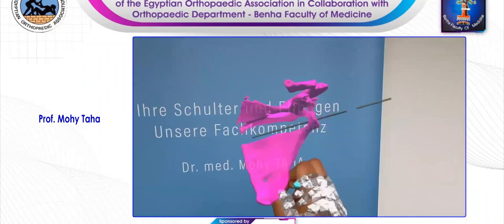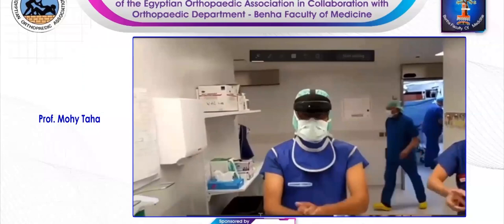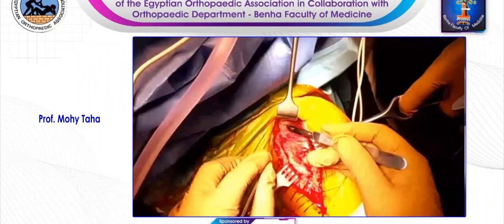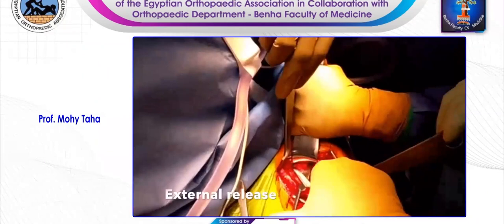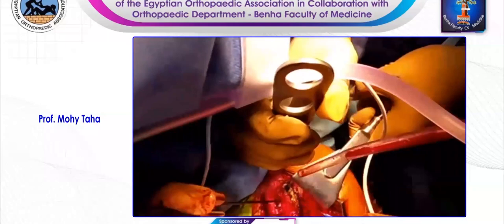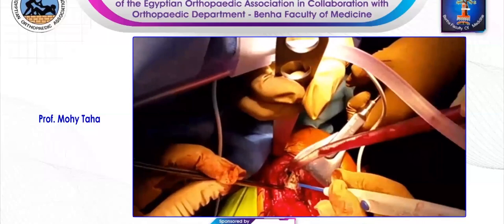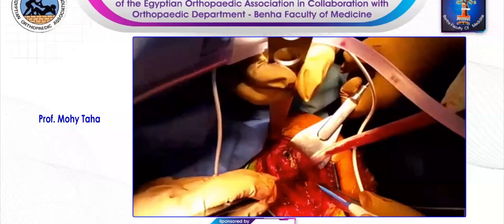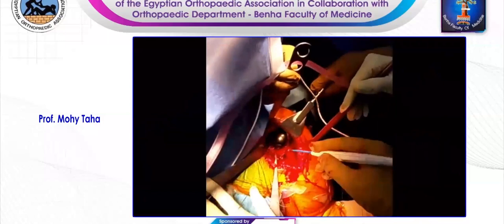Now getting ready for the operation, wearing the HoloLens. This is a deltopectoral approach, going through the previous scar and performing the external release or subdeltoid release. Now we go through the scar of the subscapularis — we couldn't really find a tendon. But here you see the pyrocarbon hemiarthroplasty. So you see the head of it. After peeling the scar, you have a good view on the head.